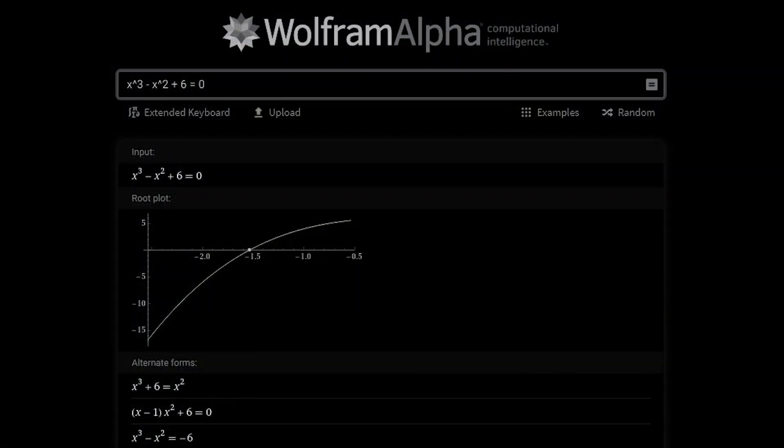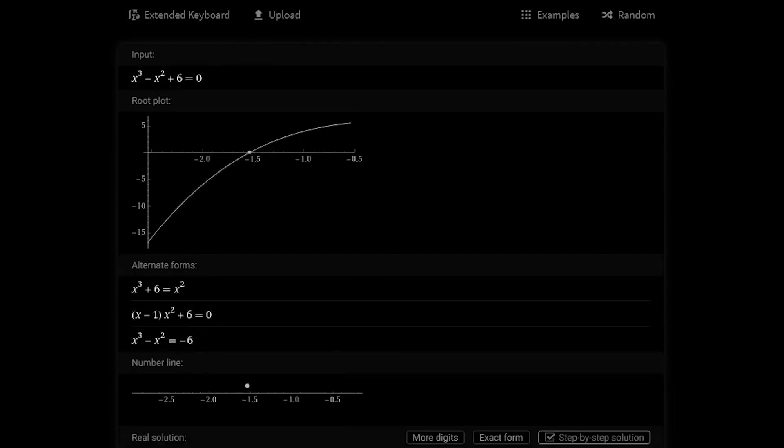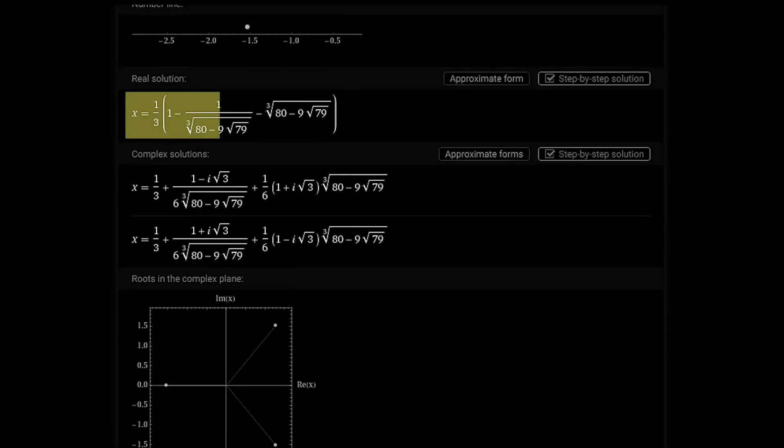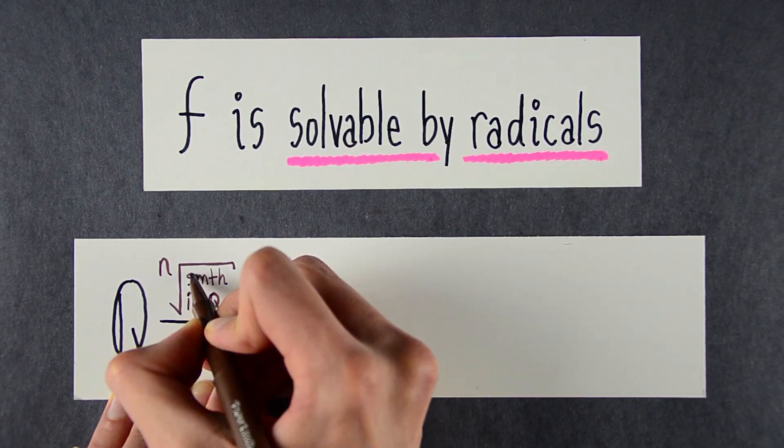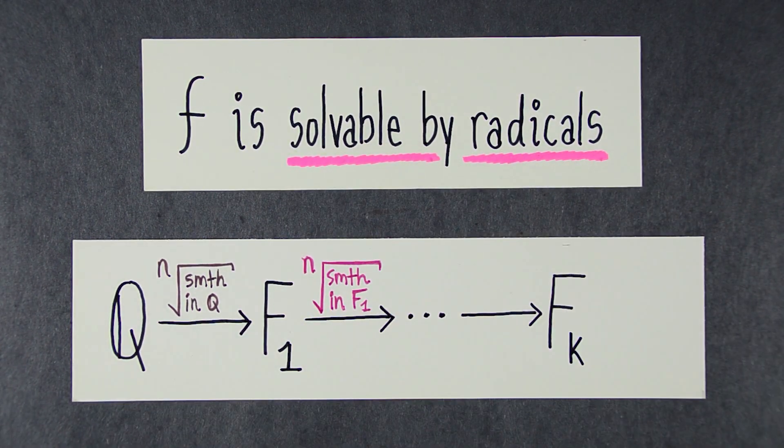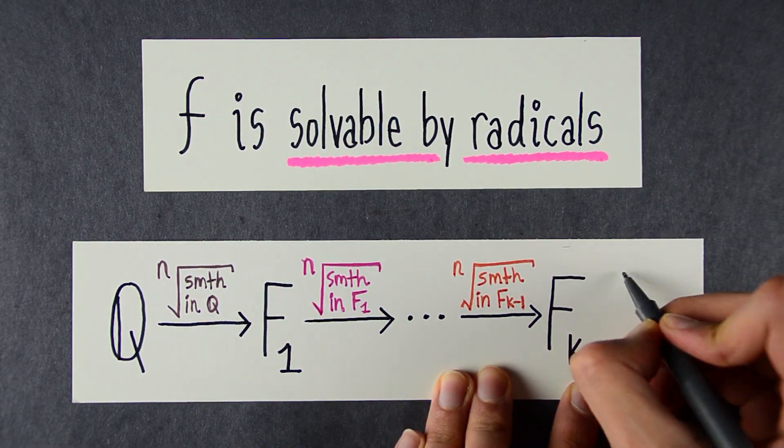In general, the roots of a polynomial may be a very complicated mix of nested radicals. But the point is, if it's solvable by radicals, you can build up the field where the roots live by successively adjoining nth roots to the rational numbers.